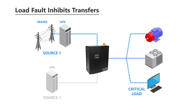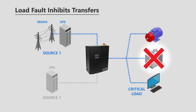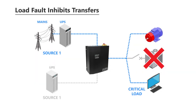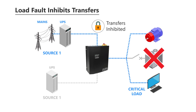In the case of a load fault, the STS will inhibit transfers until the connected equipment clears the fault. Inhibiting transfers prevents a load fault from affecting both sources, which otherwise would result in a total power system failure.